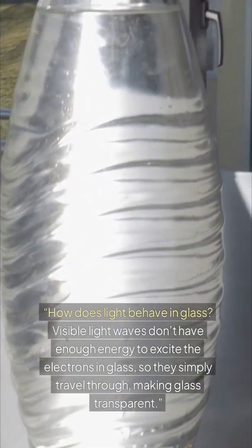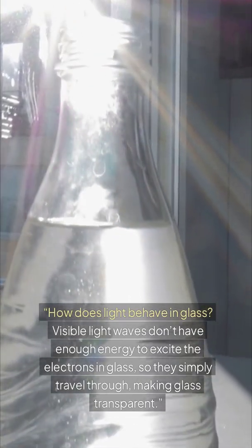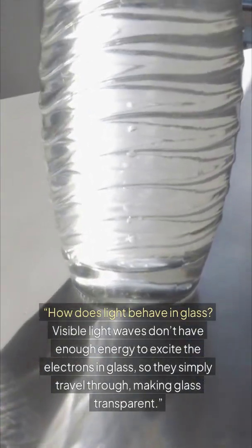How does light behave in glass? Visible light waves don't have enough energy to excite the electrons in glass, so they simply travel through, making glass transparent.